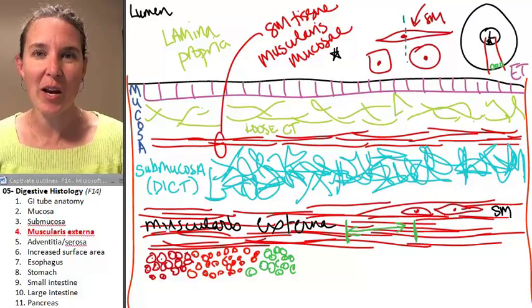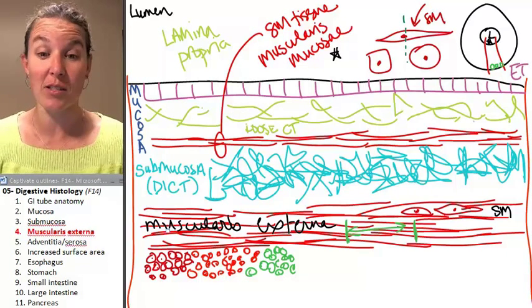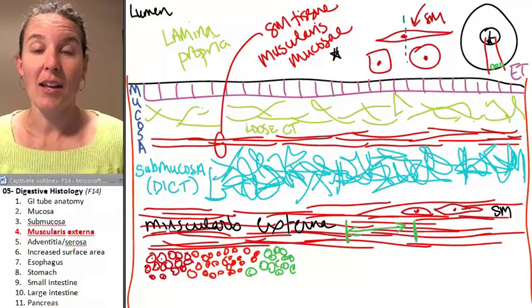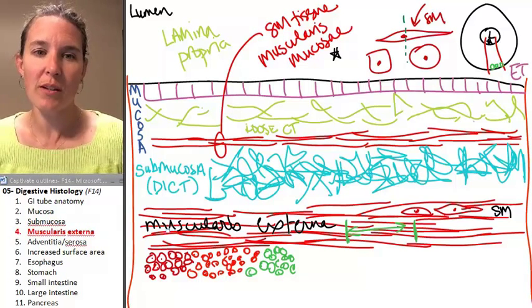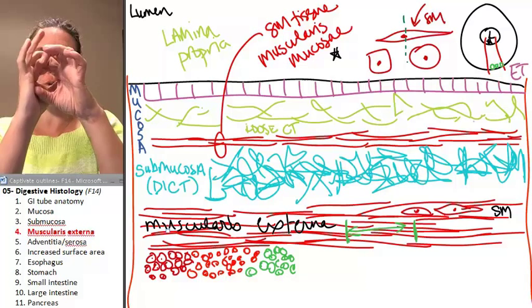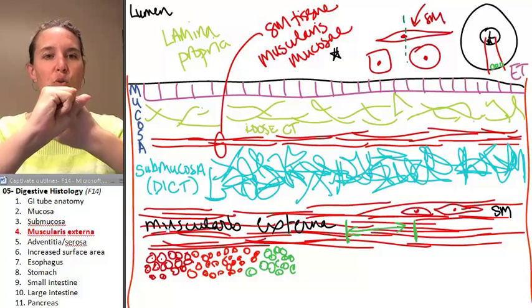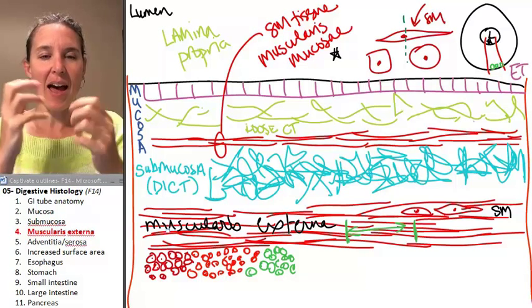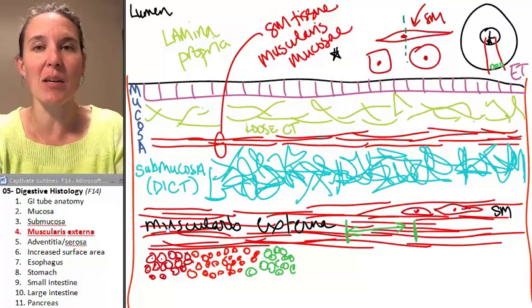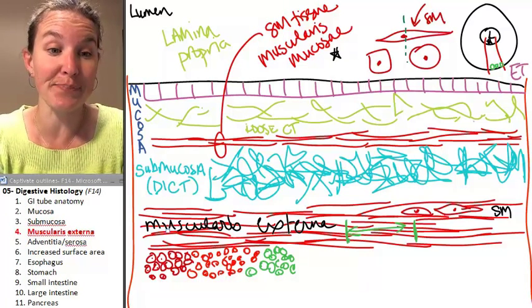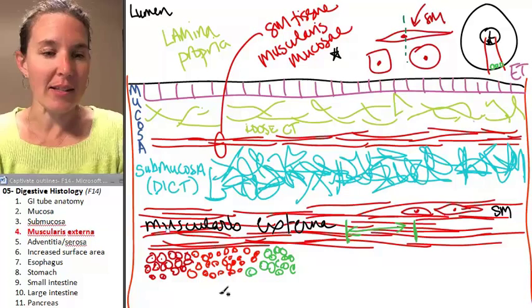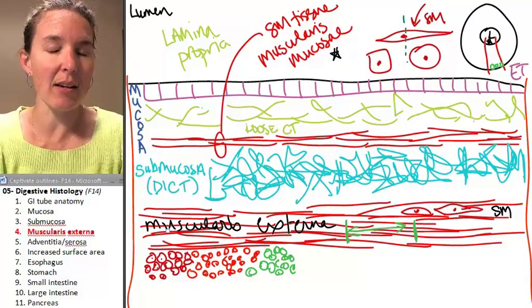It's the process of peristalsis and you can look up peristalsis on YouTube and entertain yourself a lot because it's really fantastic how the tube literally squishes the food forward. How does it do it? It does it because of muscularis externa. I think that's it. All right, let's move on to the next layer.